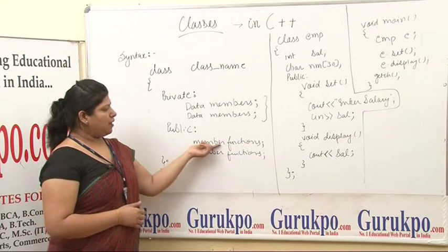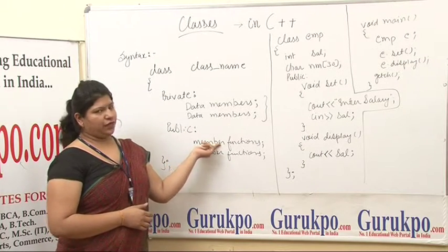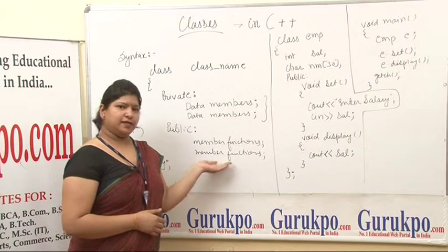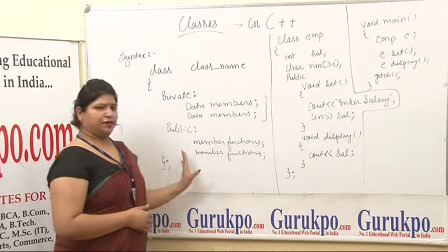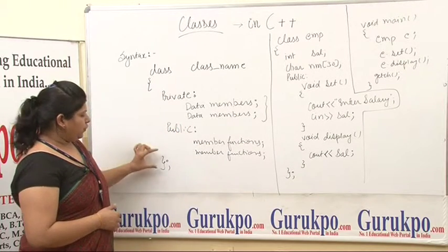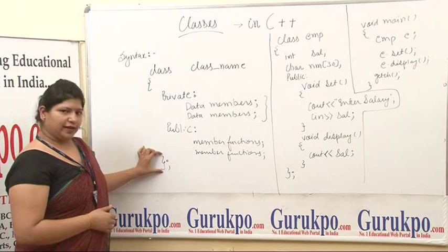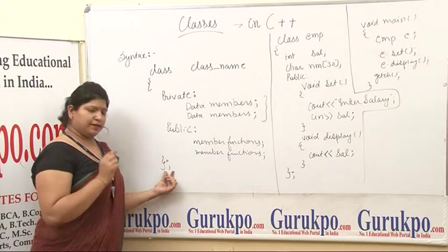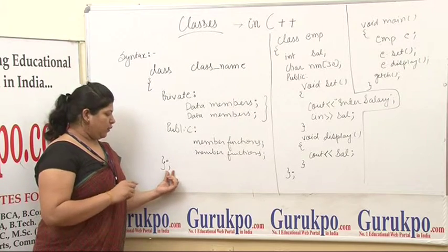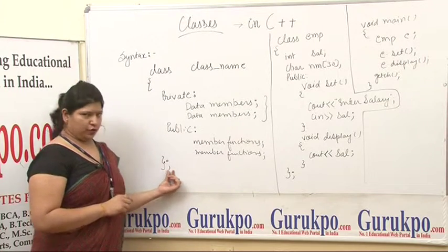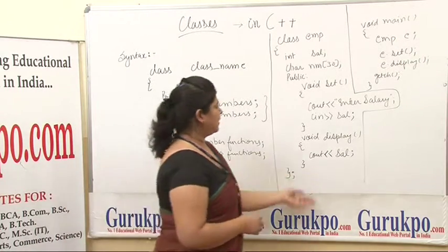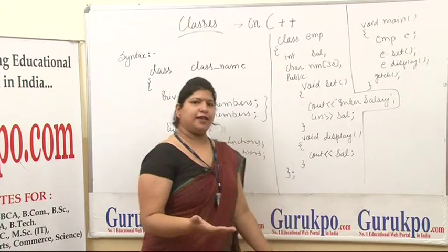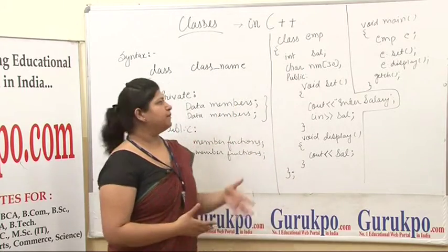Next we have member functions. Member functions are simply functions that are part of the C++ class feature. You end the class definition with a closing curly brace and a semicolon. Now let us look at an example to understand how this works.